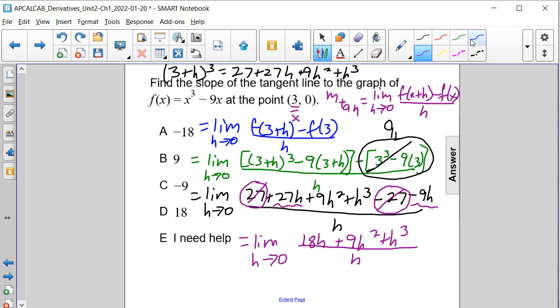And it can be rewritten as the limit as h approaches 0 of, if we divide all these terms by h, we have left 18 plus 9h plus h squared. And if we evaluate this, because now we can use direct substitution, we'll have 18 plus 0 plus 0, which is equal to 18, or answer choice D.